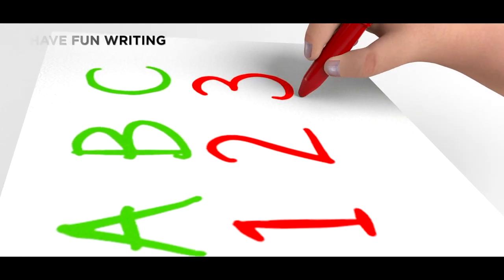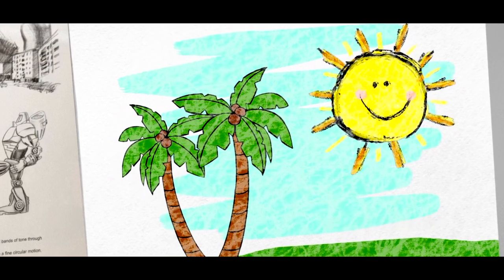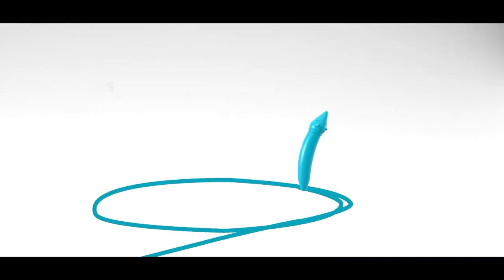Write ABC or 123, a shining sun or a coconut tree. Make them big, make them bright.